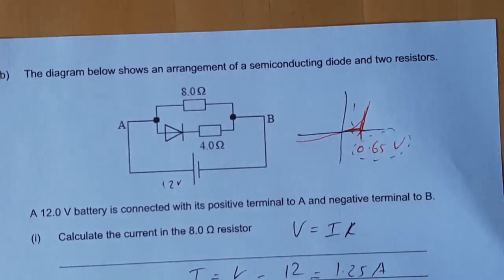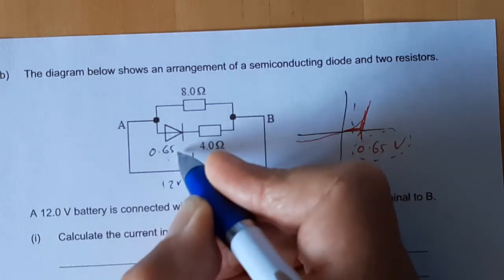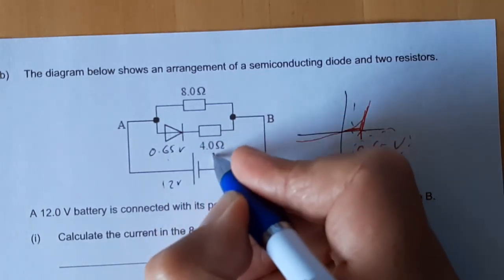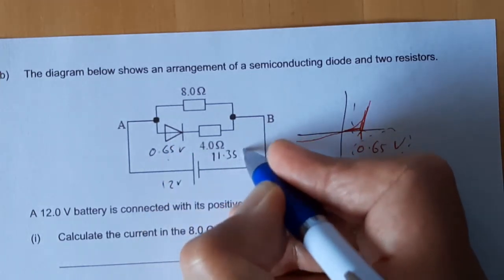We know that voltage here is never going to go above 0.65. Now that voltage plus that voltage is 12, so this voltage here is 12 minus 0.65, which is 11.35 volts.